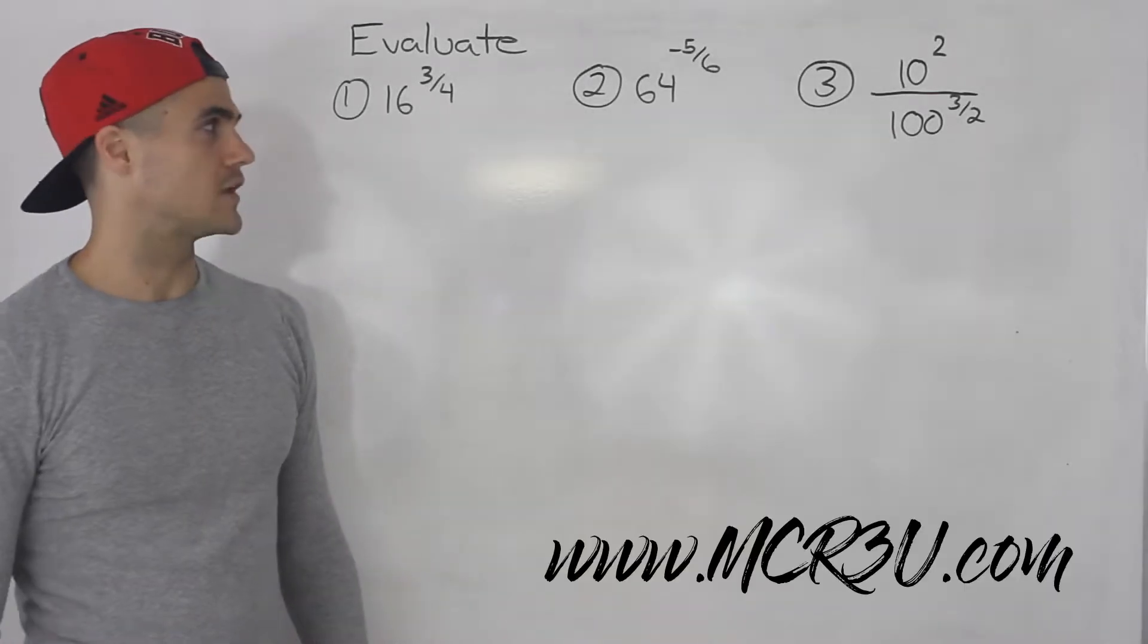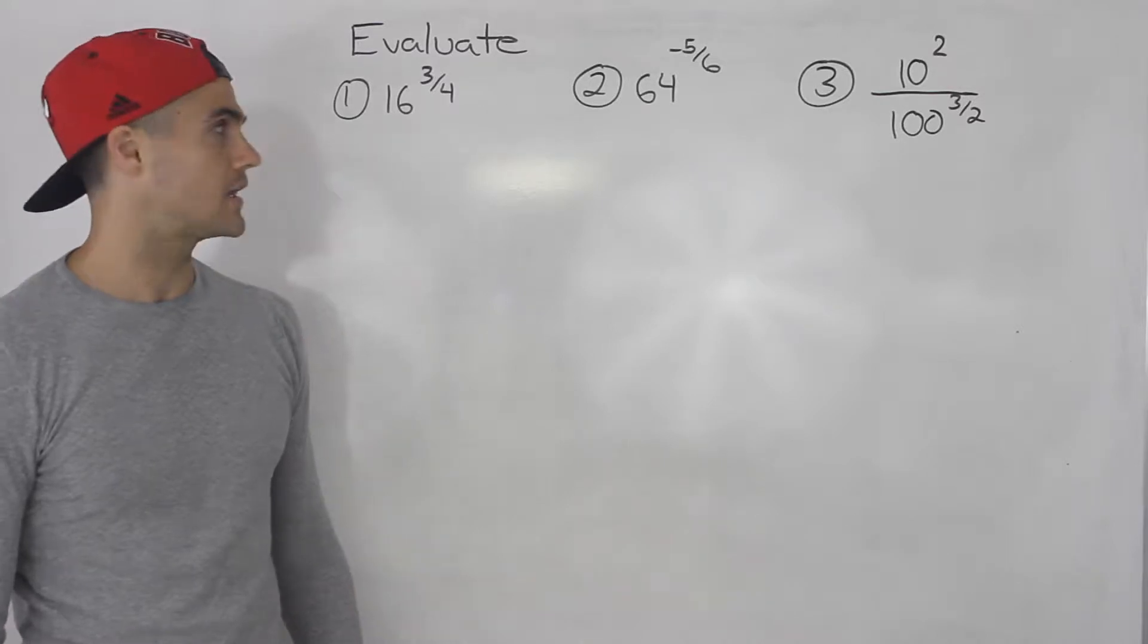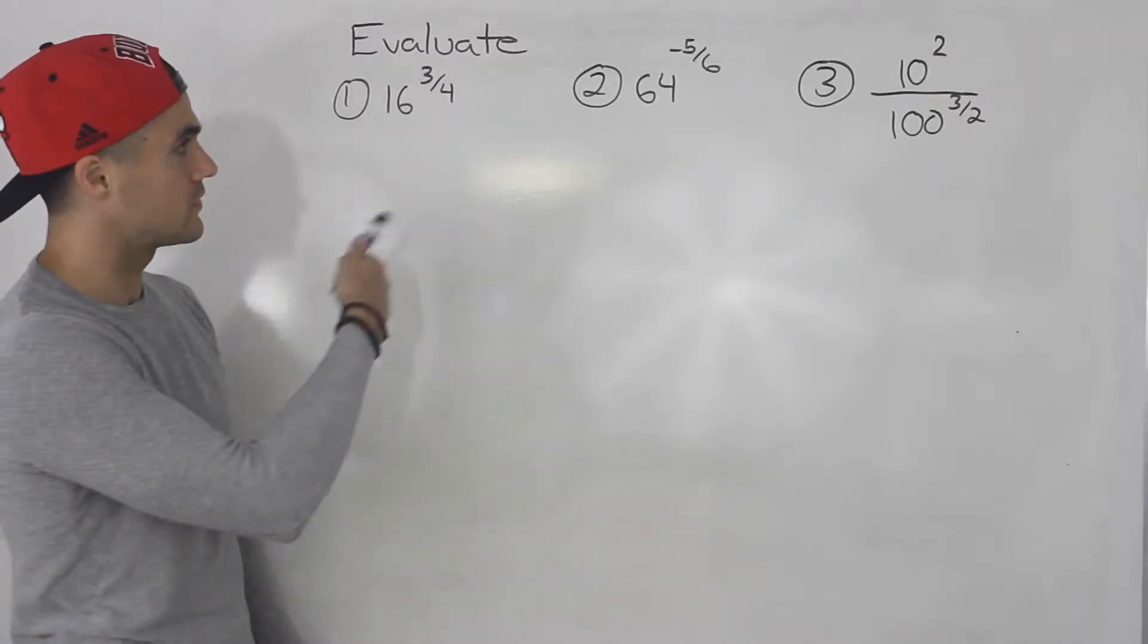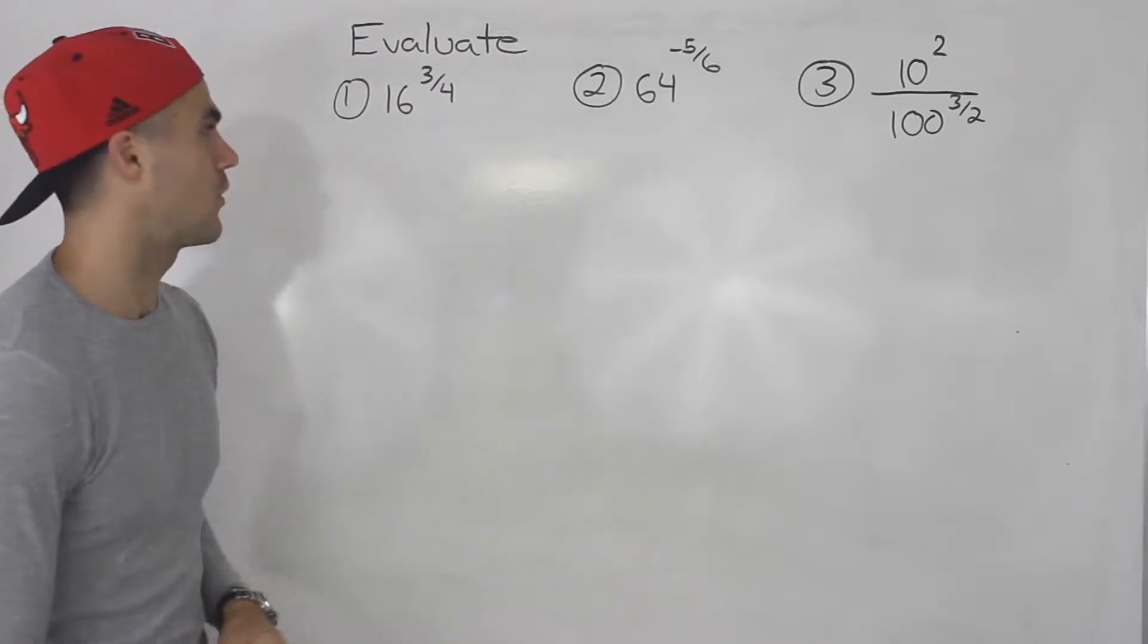What's up guys, welcome back. In this video and the next few videos, we're going to evaluate a couple of expressions containing rational exponents. Starting with these three here, we got number one: 16 to the power of 3 over 4.